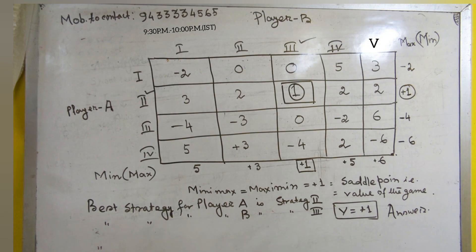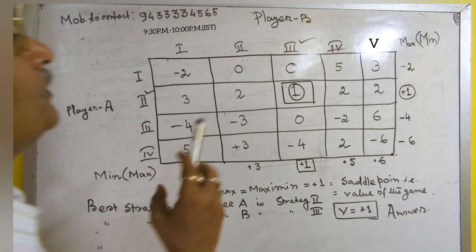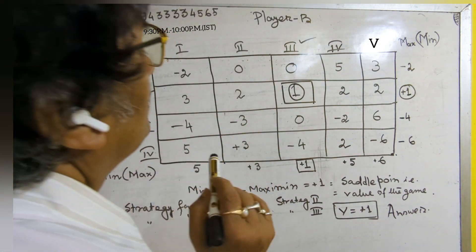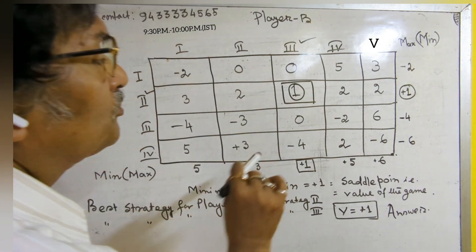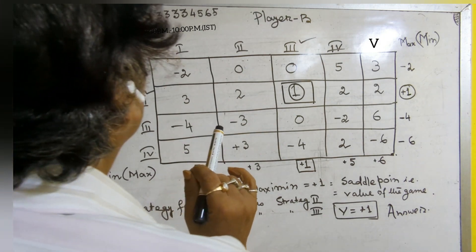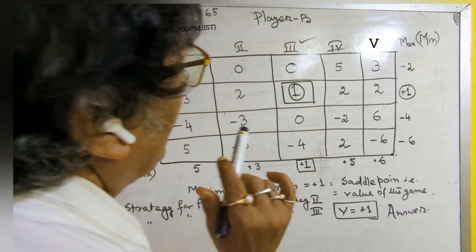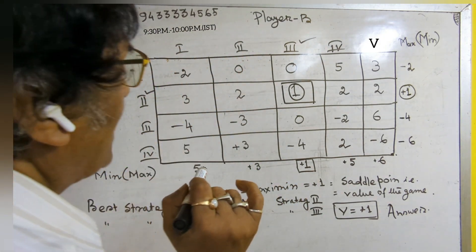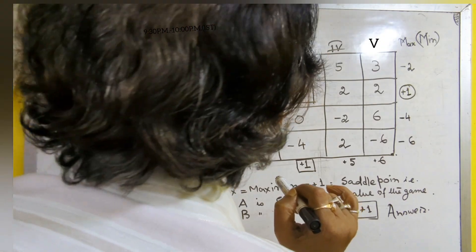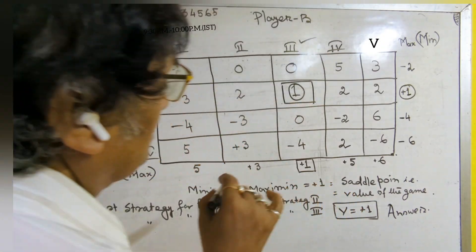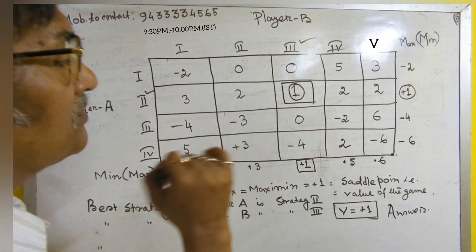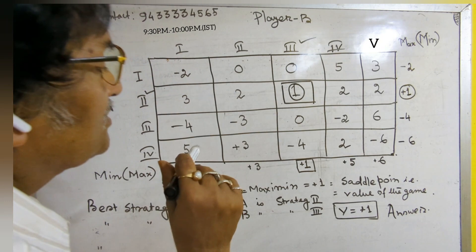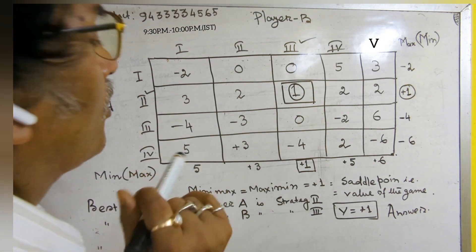We are going to solve another problem — a 2-person zero-sum game — to solve by minimax-maximin theory. Just to practice, we have taken this problem. I am discussing here in short.